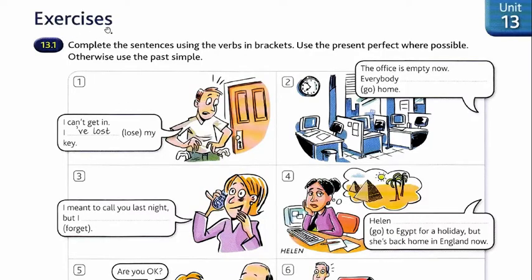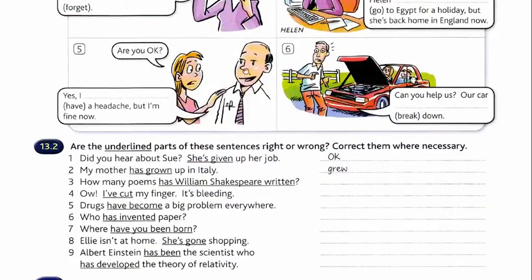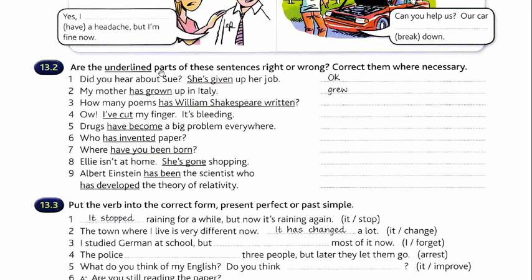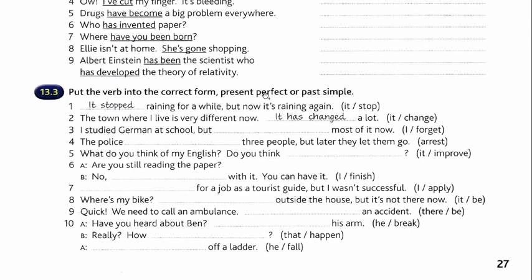So now go ahead and do the exercises. Exercise 13.1: complete the sentences using the verb in brackets — use the present perfect where possible, otherwise use past simple. Then underline the correct parts of the sentence and correct them where necessary. And put the verbs into the correct form: present perfect or past simple.